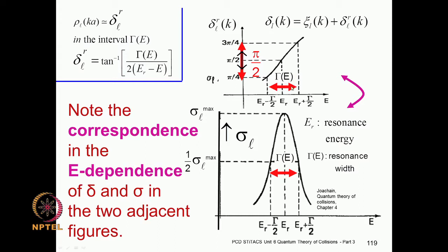As the phase shift goes through pi/2 in the immediate vicinity (within the width Gamma), the cross section which is maximum at E_r becomes half at E_r ± Gamma/2. This is why Gamma is sometimes called the full width at half maximum (FWHM) — it is the full width from the lower point to the upper point of this range, where the cross section equals half the maximum for a pure Lorentzian resonance.